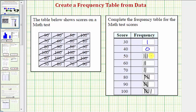For 50 we have 3, and for 60 we have 2. So the frequency for 50 is 3, the frequency for 60 is 2, the frequency for 70 is also 2. Notice the frequency for 80 and 90 are both 5. And finally the frequency for 100 is 6.